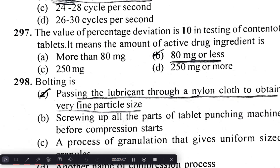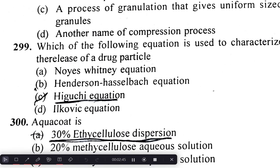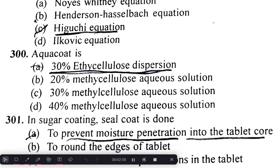Bolting is the passing of lubricant through a nylon cloth to obtain a very fine particle size. The Higuchi equation is used to characterize the release of drug particles. Aquacoat is a 30% ethyl cellulose dispersion.